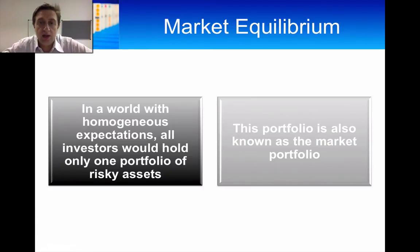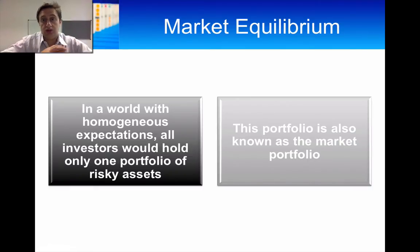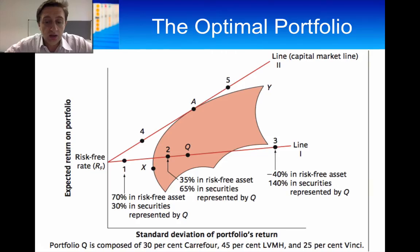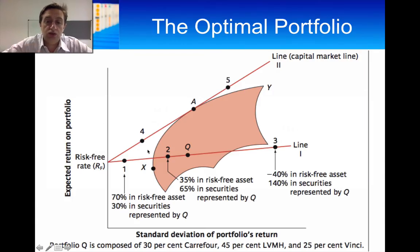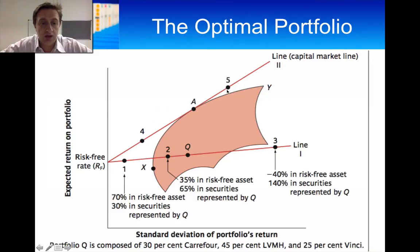A key point is that the weights of the assets in the market portfolio correspond to the value of each asset. So if you have a very large company in a country, it will have a higher weighting in the market portfolio because it's large relative to all other companies. In market equilibrium, all investors hold only one portfolio of risky assets, and once you have that portfolio, you can decide how much risk to take on by combining it with the risk-free asset along the capital market line.